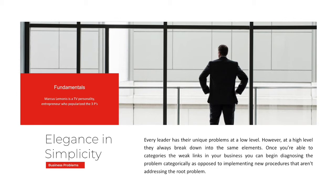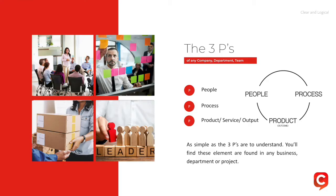Every business at a low level may have some unique problems, however if you classify these problems generally they land in three specific categories. If you can identify which category it lands in, it makes it much easier to diagnose and fix. These three categories apply to a business, a department, a project, a team — it's always the three P's: a people problem, a process problem, or a product problem. A product is what you produce — a physical good, a service, an output of leads or sales, depending on your department.